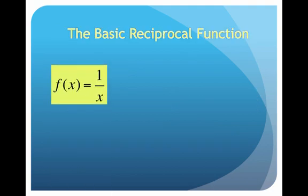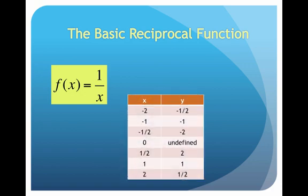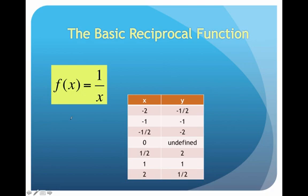Let's talk about the basic reciprocal function 1 over x. Here's a domain-range table where I'm plugging in values. If I plug in negative 2, I get a y value of negative one half. I plug in negative 1, I get negative 1. If I plug in negative one half, what I'm getting is 1 divided by negative one half. How do we divide by a fraction? We multiply by the reciprocal. So we take 1 and multiply it by the reciprocal of negative one half, which is negative 2, and that's how I get negative 2.